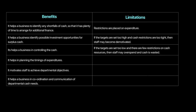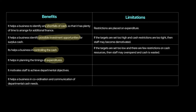Now let's discuss the benefits and limitations of a cash budget. A cash budget is useful to identify any shortfalls of cash — it gives you time to arrange for financing, maybe seek a loan at a concessionary rate. If the business has surplus cash, it can help identify possible investment opportunities. It helps in controlling cash, since that's one area where there can be excessive leakages that could damage the firm. It can also help in planning the timing of expenditure — for example, when to buy machinery or when to make capital investments. Having a cash budget drawn up will also help motivate staff to achieve departmental objectives, and supports coordination and communication.